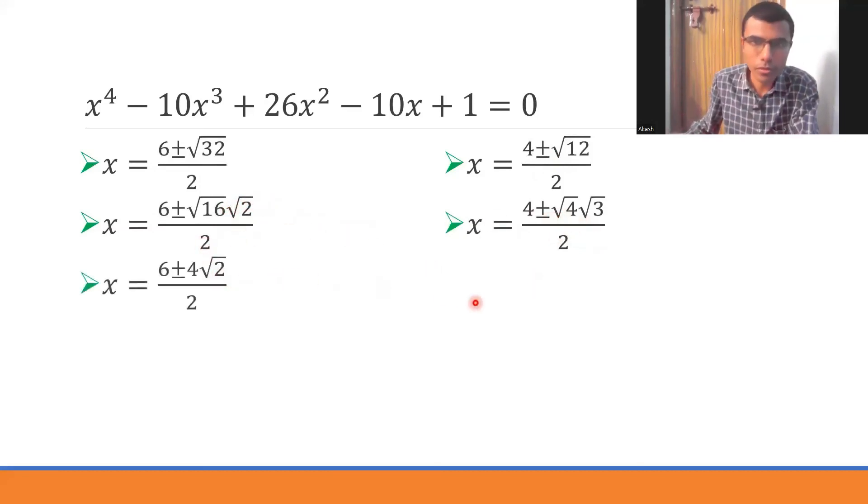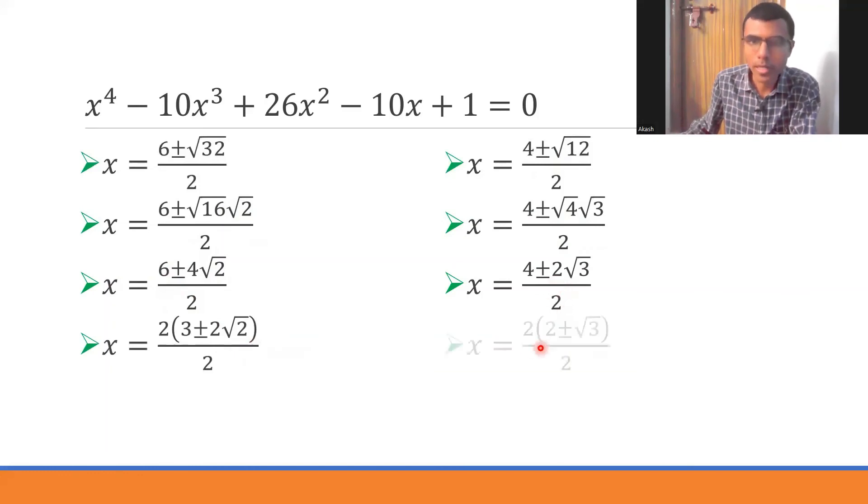So this would be nothing but (6 ± 4√2)/2 and (4 ± 2√3)/2. Now in these two terms I can take out 2 common. Therefore I'd be getting 2(3 ± 2√2), and here if I take 2 common I'd be getting 2(2 ± √3).